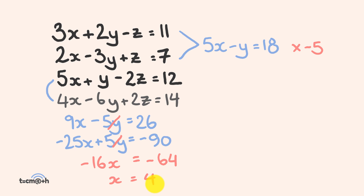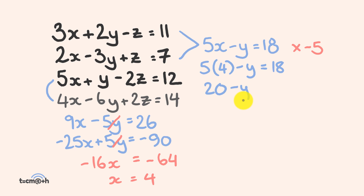That's the first variable solved. Now we substitute x equals 4 into one of our two-variable equations to find y. Substituting into the first blue equation: 5 times 4 minus y equals 18, so 20 minus y equals 18. Solving this, y equals 2. We now have our second variable: y equals 2.